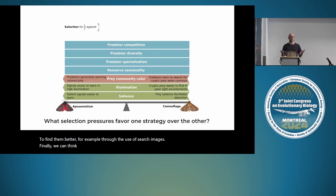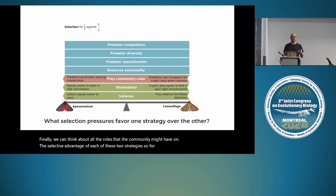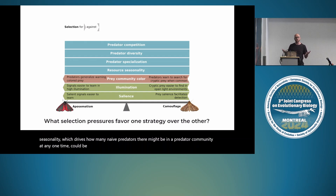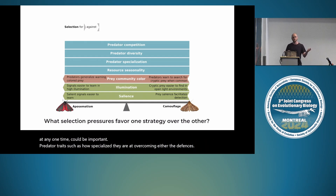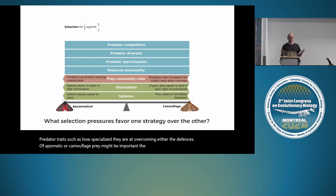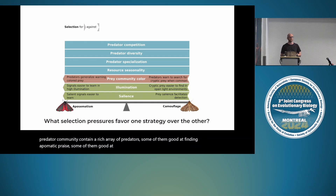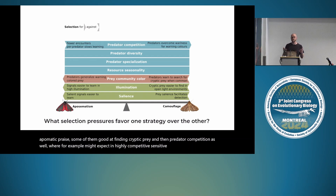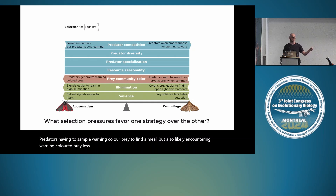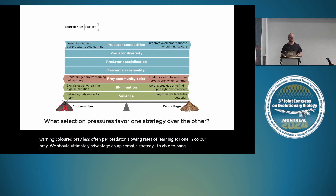The predator community also matters. Resource seasonality drives how many naïve predators are present at any one time. Predator traits—how specialized they are at overcoming defenses of aposematic or camouflaged prey—may be important. Predator diversity means some are good at finding aposematic prey and some at finding cryptic prey. In highly competitive predator communities, predators may sample warning-colored prey to find a meal but encounter them less often per predator, slowing learning rates—ultimately advantaging aposematic strategies that can educate the predator community.